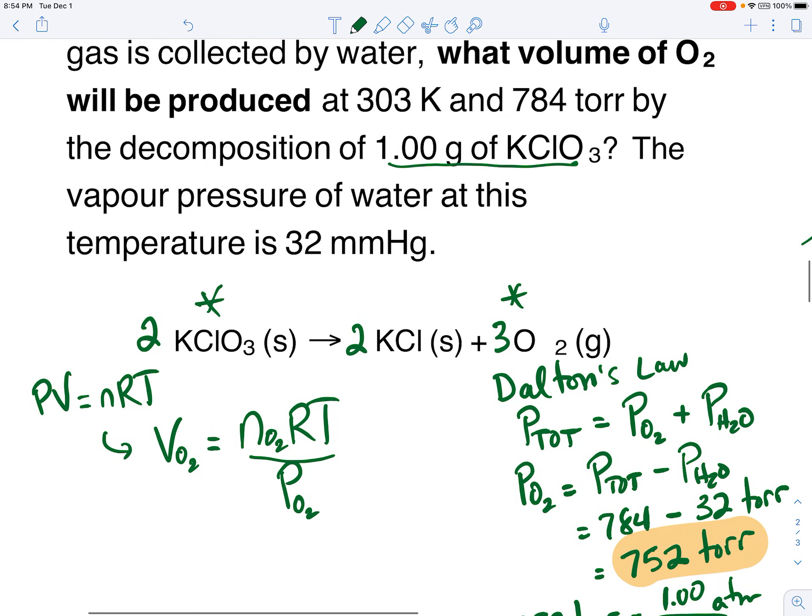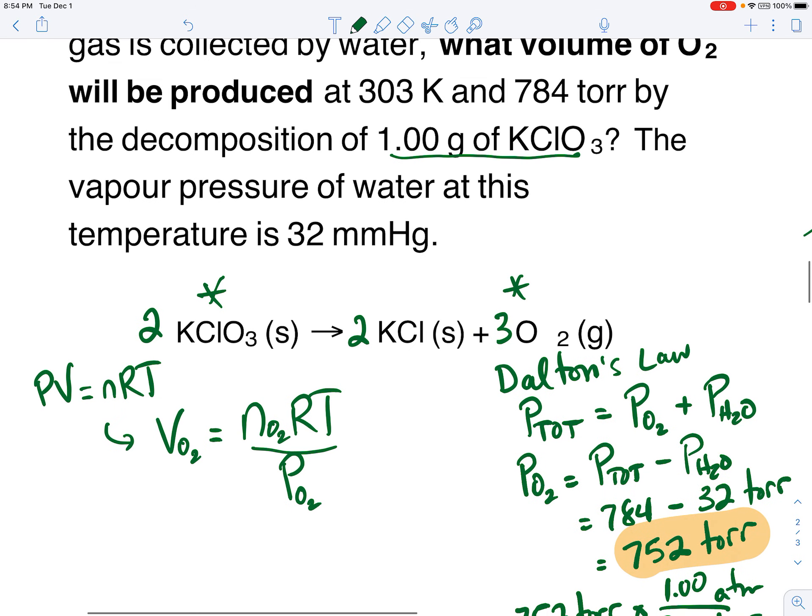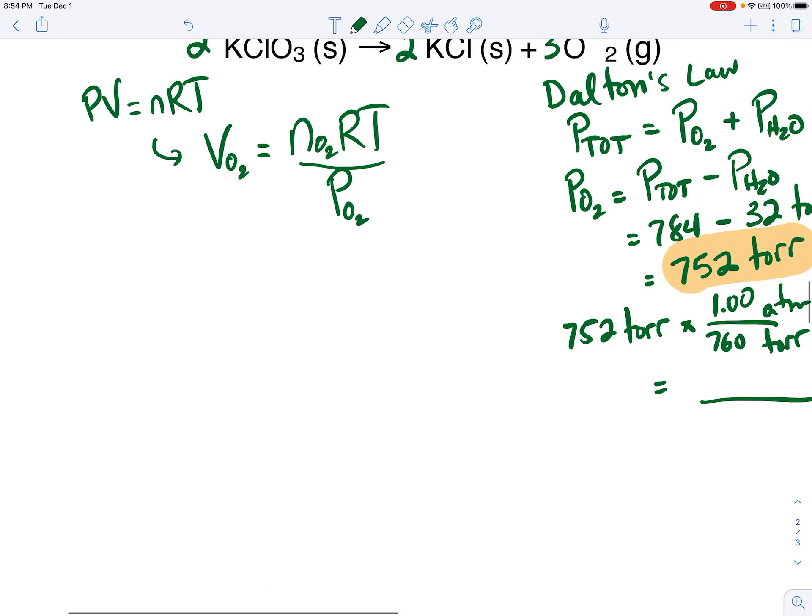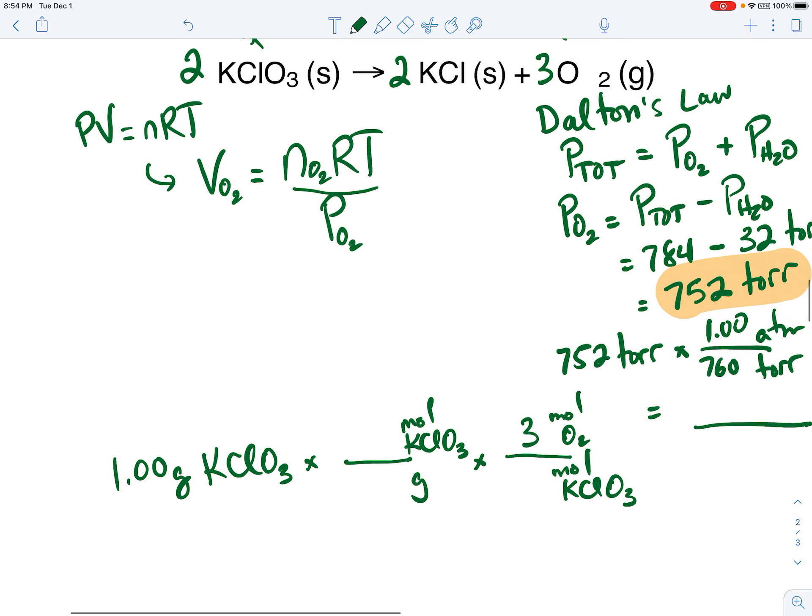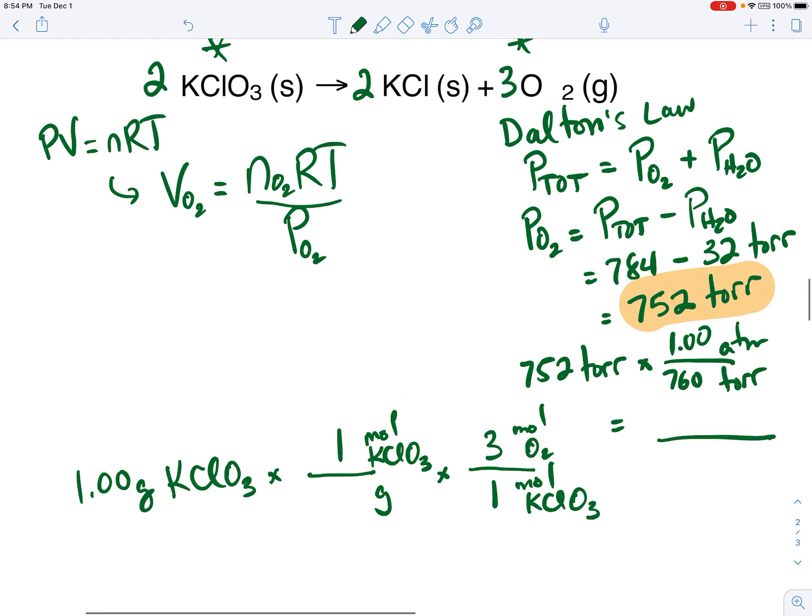We knew up above that we were decomposing 1 gram, 1.00 grams, of the potassium chlorate. So let's do that. Okay, so we're going to take our 1.00 grams of potassium chlorate and convert that to moles of potassium chlorate. So we're doing stoichiometry here. And then using that balanced equation, convert the moles of potassium chlorate to moles of oxygen. So the balanced equation said 3 moles of oxygen for every 1 mole of potassium chlorate. And 1 mole of potassium chlorate, we just need to get its molar mass.